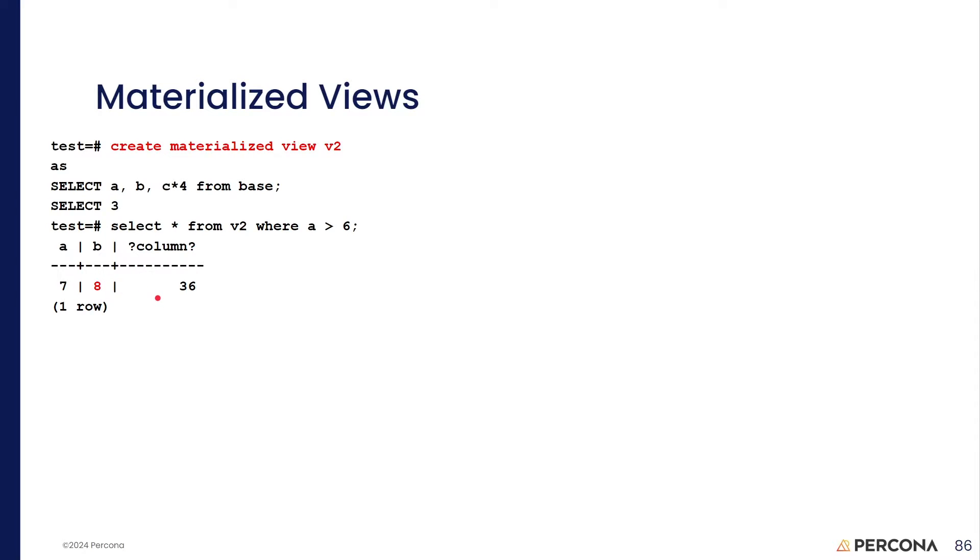Now, in the meantime, after we create this materialized view, someone's come in and they've updated our table, our base table, not the view, the underlying base table, and they set the value of B to 99. Originally, it was 8. Now, it's 99.